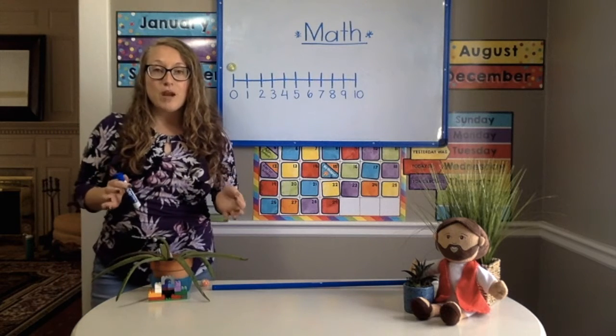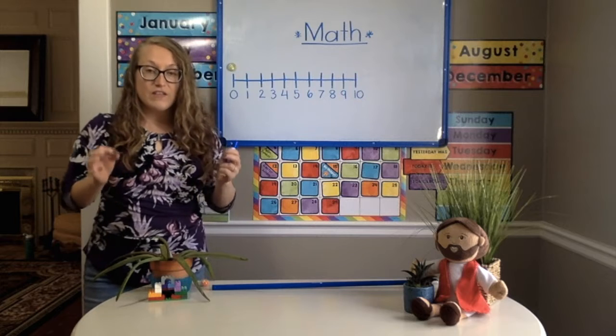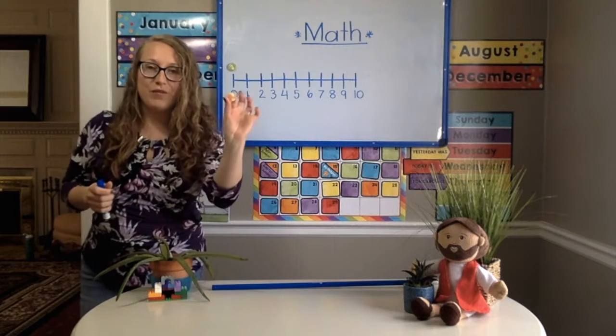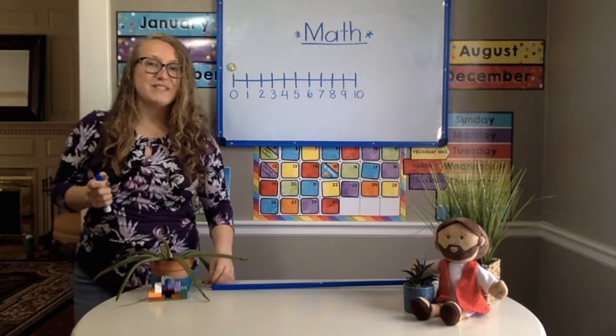So go grab your number lines. Make sure you have something that you can use with it, like a little piece, like a game piece. If you have any warm fuzzies lying around, you can use those too.